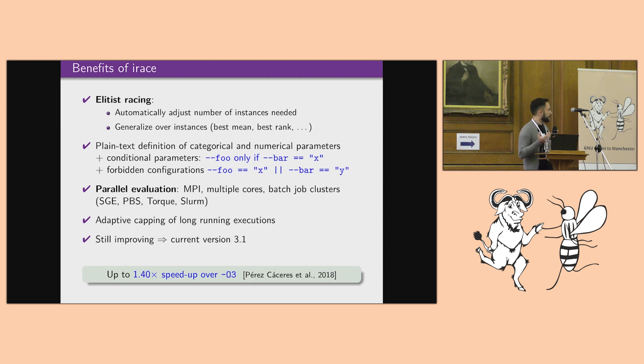And we are still working on it. The current version is 3.1, but we are still adding more and more features. And the main result that we got when we applied to GCC is that for some codes that we had of our own, that we were using GCC to compile this code, we were able to obtain 1.40 speedup over O3. And this for us was surprising because, well, yes, it was a big speedup for us.